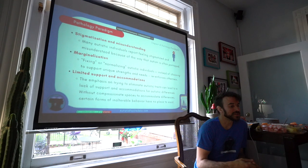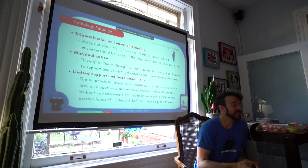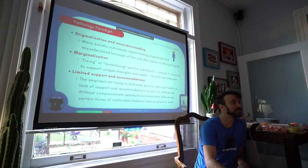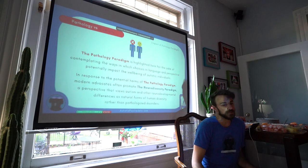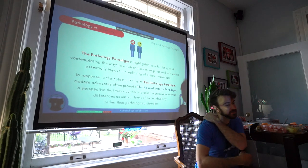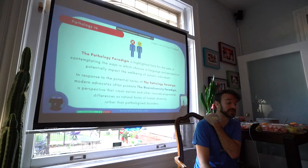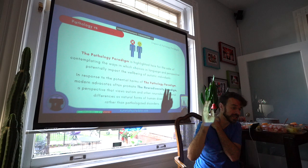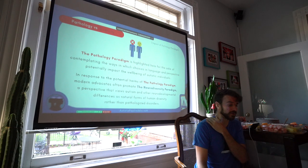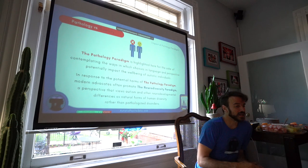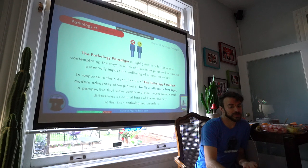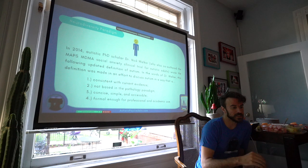While at the same time, we've seen really remarkable changes within our community as well. But just trying to not paint any miracle narratives. While at the same time, honoring the real challenges that people have. So, in response to the potential harms of that pathology paradigm, more modern advocates are promoting the neurodiversity paradigm. Which is the perspective that views autism and other neurodevelopmental differences, like ADHD, or even dyslexia as a natural form of diversity. Rather than a pathologized disorder. Something that can elicit a new adaptation, a new way of problem solving. Or a new kind of social issue to address in the collective sense.